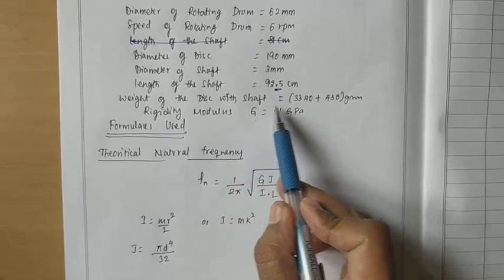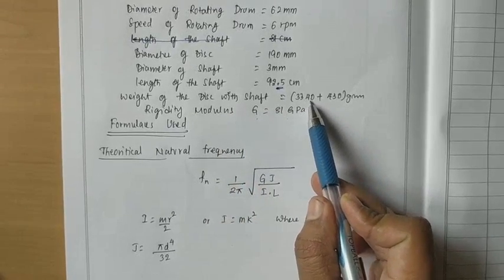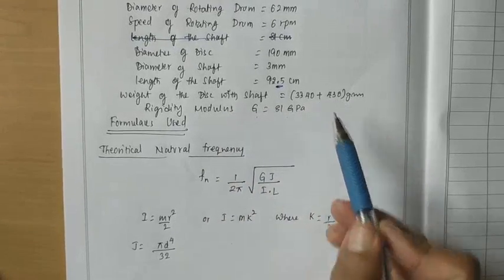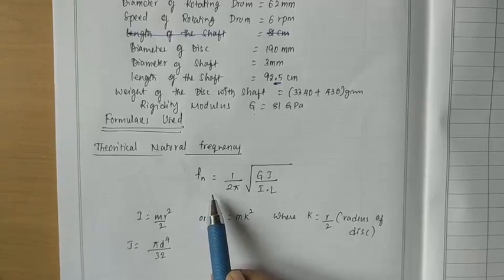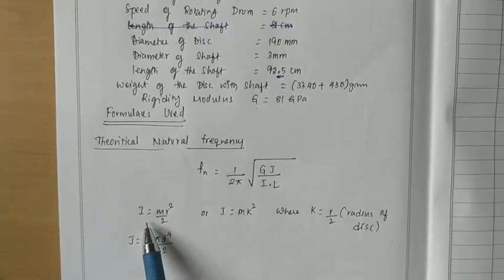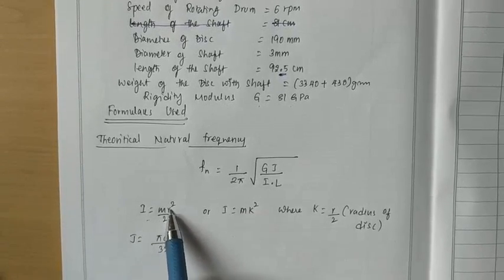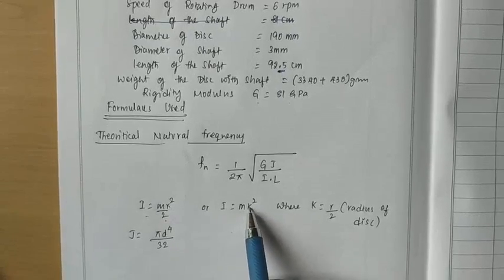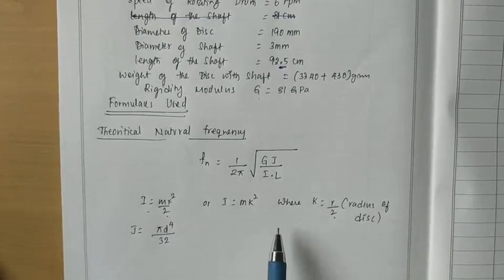In order to find out the rigidity modulus is 81 GPa for this particular material. And weight of the disk with the shaft is 3340 plus 430 grams. Now, in order to find out the theoretical natural frequency, I is mass moment of inertia. M R² by 2, or M into K² where K is R by 2, which is radius of the disk.